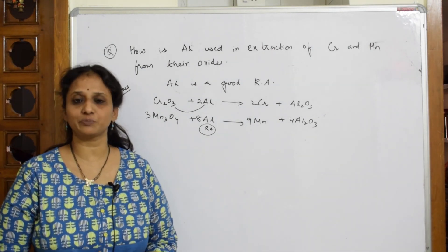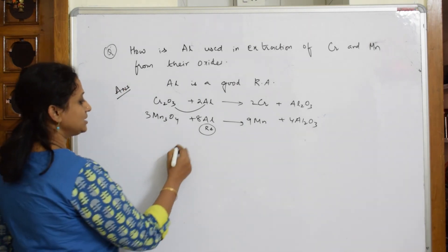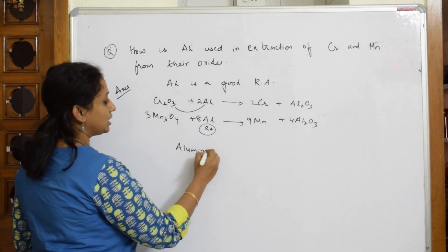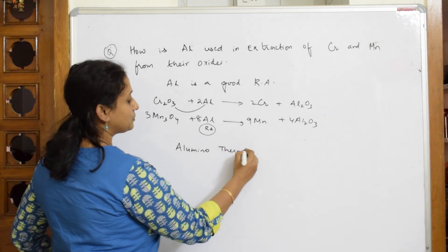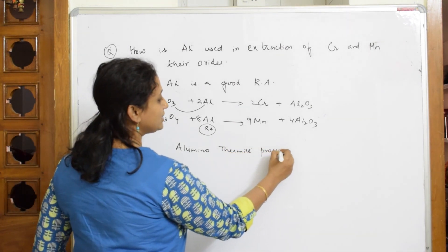And one more thing you should remember, aluminum is also used in aluminothermite process which you have also seen. You can write that also. Aluminum is used in aluminothermite process for joining the railings.